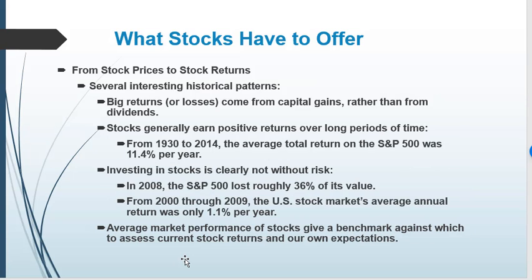Big returns can come from capital gains, certainly more from capital gains than from dividends. Stocks generally earn positive returns over a long period of time. From 1930 to 2014, the average return is about 11.4%. However, it's clearly not without risk — in 2008 it lost 36% of its value, and from 2000 to 2009 it only averaged a rate of return of 1.1%. The stock market really fluctuates over time.